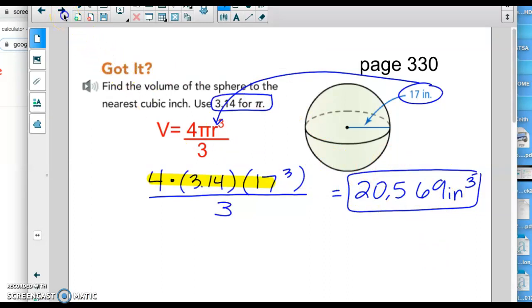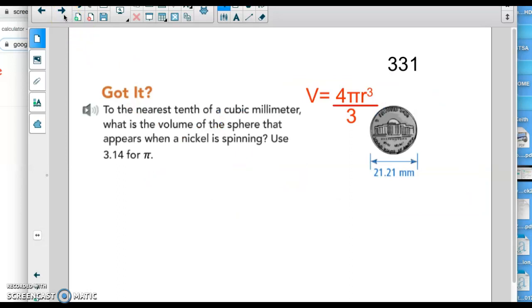Let's try one more. And this one's kind of a unique problem. It's saying to the nearest tenth of a cubic millimeter, what is the volume of the sphere that appears when a nickel is spinning? So they give you this picture of a nickel and if you've ever flipped, flicked a coin on a table and it spins, it's creating a sphere. Again, they want us to use 3.14 for π. Let's point out a few things. First, use 3.14 for π. Next, how am I going to get this diameter to be the radius? I need to divide this by 2. It's kind of a longer number. So if you divide that by 2 in your calculator, you're going to get your radius to equal 10.605. So that makes this formula that much longer when this little r turns into now a five-digit number.